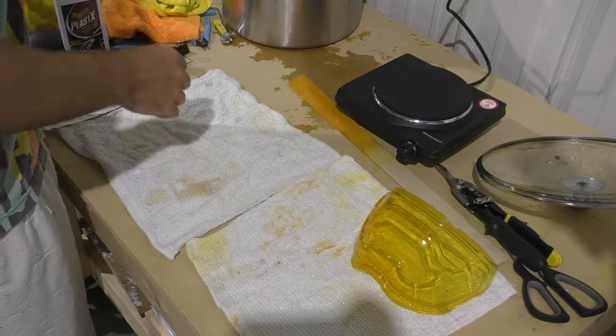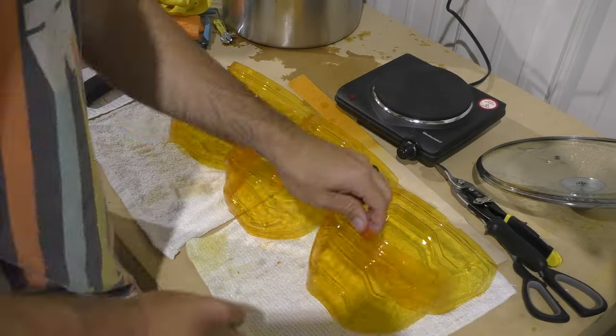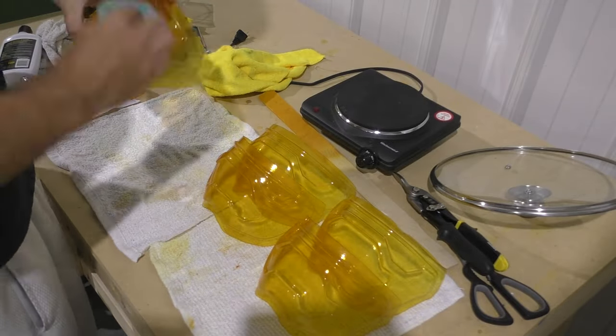Once we've got the color down, we're going to take these out, let them air dry overnight, and then we are going to repeat the plastic buffing and cleaning just to clean off any excess dye or any watermarks like that, to make sure that the surface is clean once more for the tinting process.